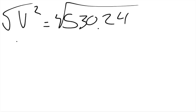And so what we have is that V squared equals 530.24. And so we've got to take the square root of both sides. And we get that V equals 23.